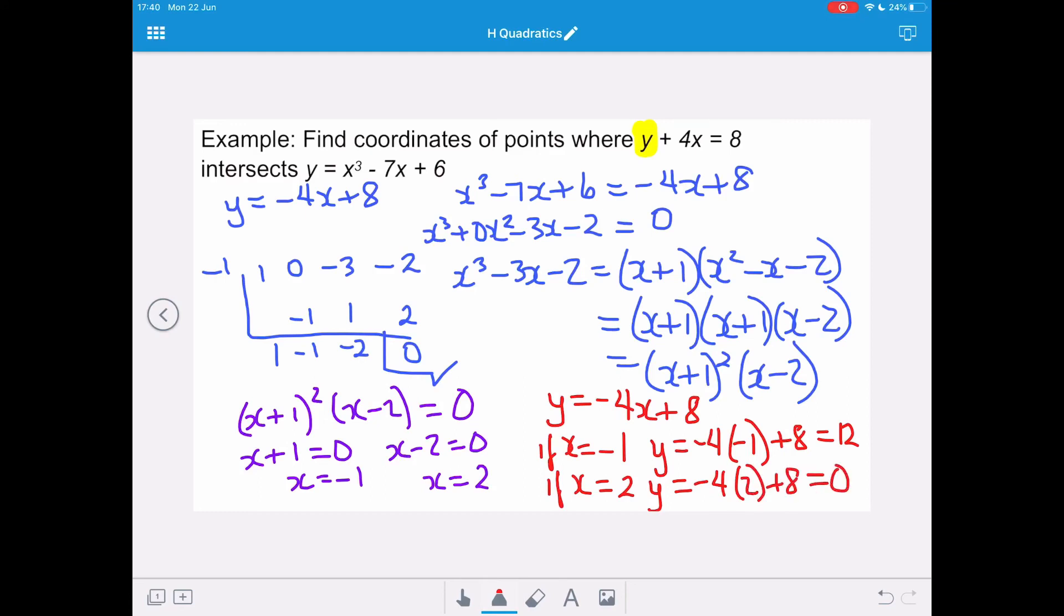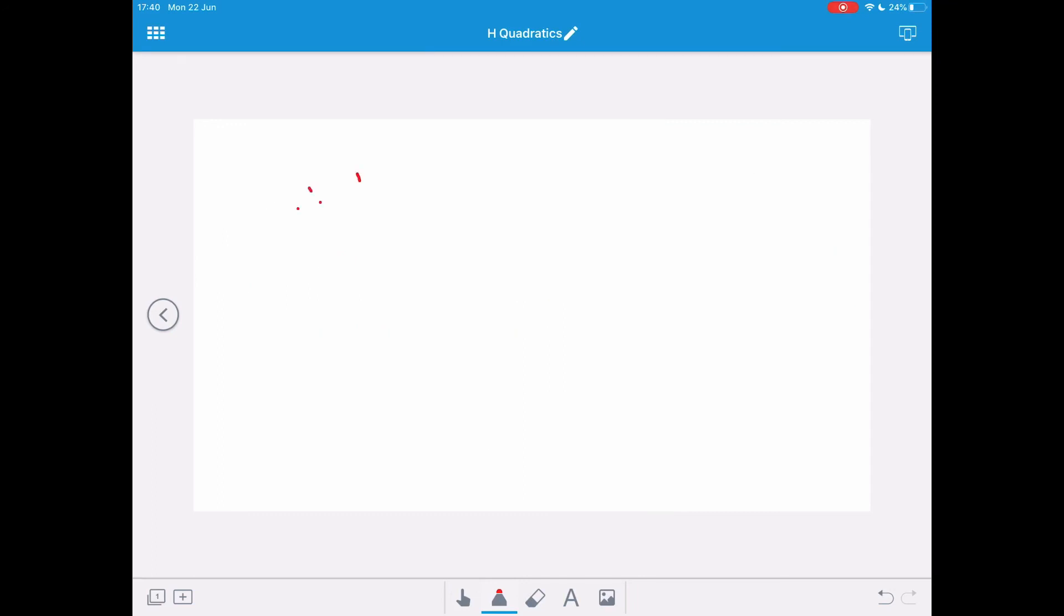So that means because of our repeated root, we have a tangent at the point negative 1, 12, and we have another point of intersection at the point 2, 0.